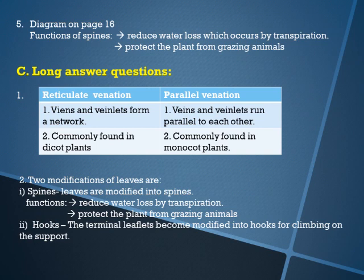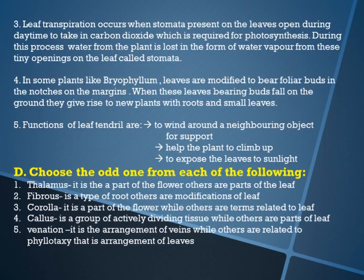Two modifications of leaves: first, spines — leaves are modified into spines. Functions: to reduce water loss by transpiration and to protect the plant from grazing animals. I have also given hooks — the terminal leaflet becomes modified into a hook for climbing onto the support. In question number two of the long answers, you can give any two modifications along with their functions or roles.